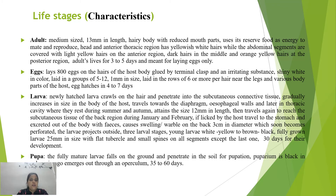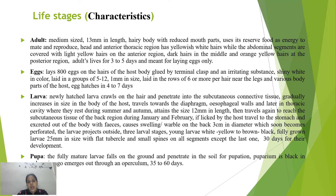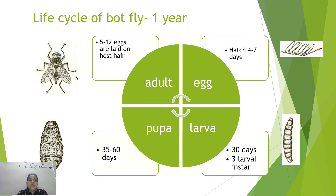There are three larval stages. Young larvae are white to yellow-brown; fully mature larvae are 25 mm in size with flat tubercles and small spines on all segments except the last. Larval development takes 30 days. Mature larvae fall to the ground, penetrate the soil for pupation, and the black puparium undergoes pupation for 35 to 60 days before an adult emerges through an operculum. The whole life cycle is completed in one year.